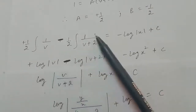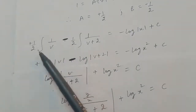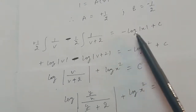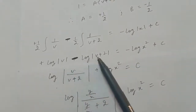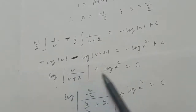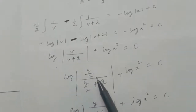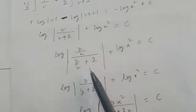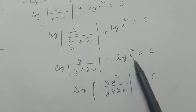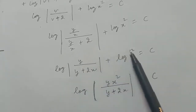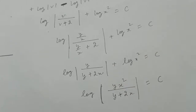Evaluating: (1/2) log|v| minus (1/2) log|v+2| equals minus log|x| plus c. Taking 1/2 common gives log|v/(v+2)| equal to minus 2 log|x| plus c, which is minus log x squared plus c. Moving log x squared to the left gives log|v/(v+2)| plus log x squared equals c. Substituting v equals y/x back, and simplifying by cancelling x, gives log|y/(y+2x)| plus log x squared equal to c, which combines as log|yx squared/(y+2x)| equal to c.